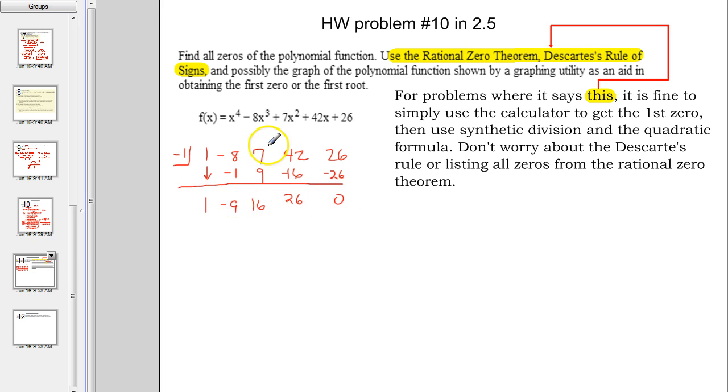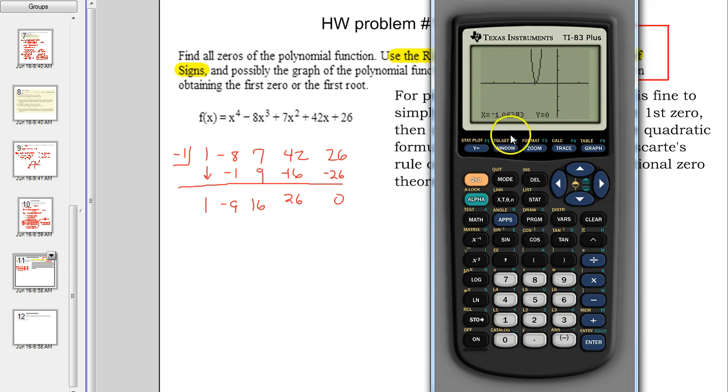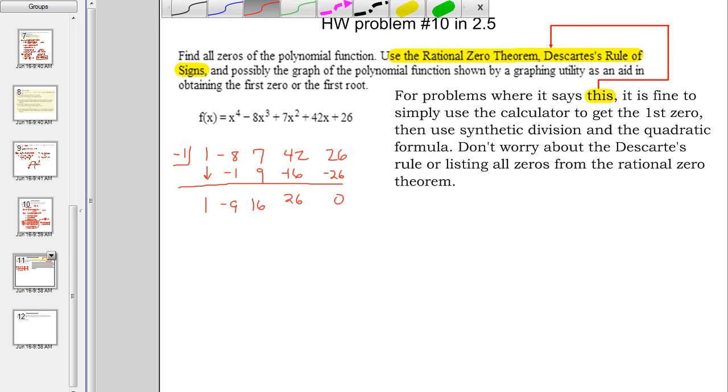Remember, because that graph showed us that negative one was even multiplicity, that means that it counts twice. So that means we can use negative one again when we do synthetic division. We don't need to go all the way to the zero. Just stop at the 26. Now we do one more iteration of synthetic division. And this time we get this.